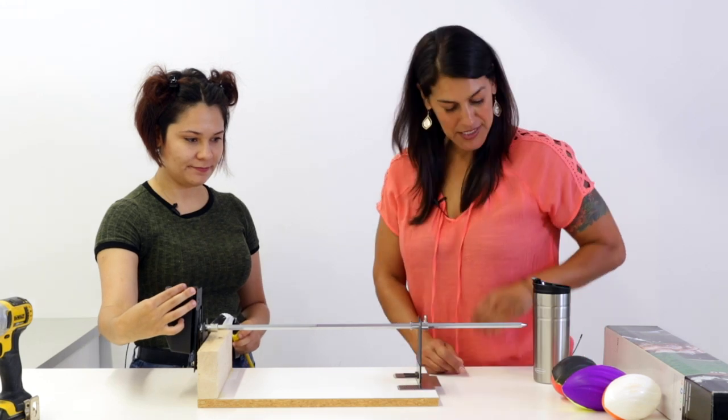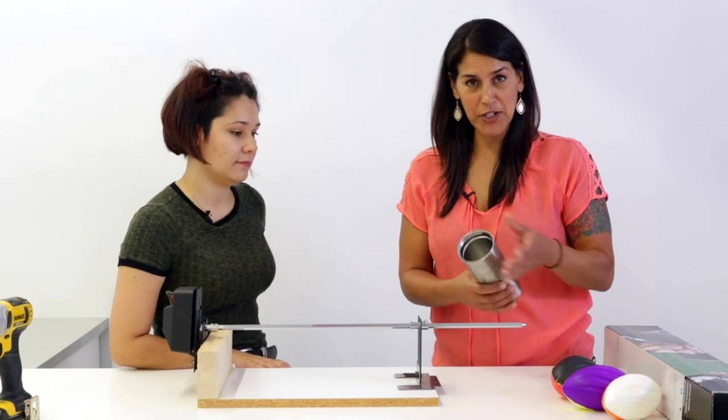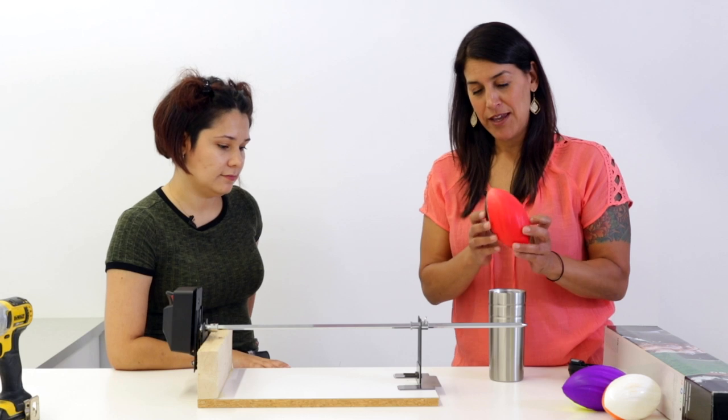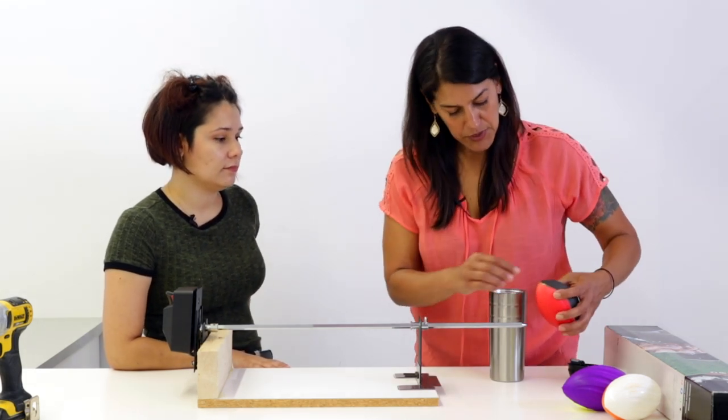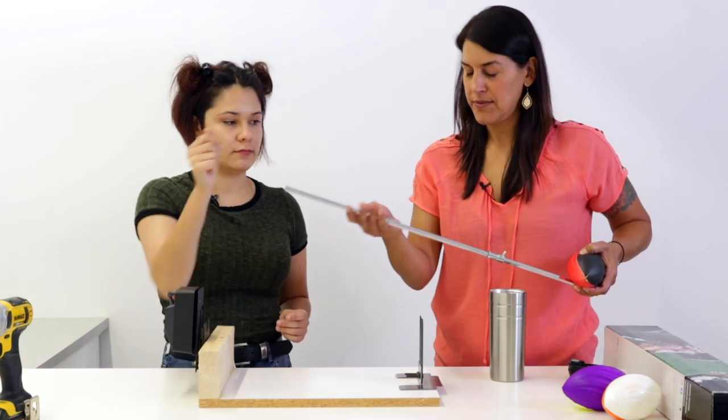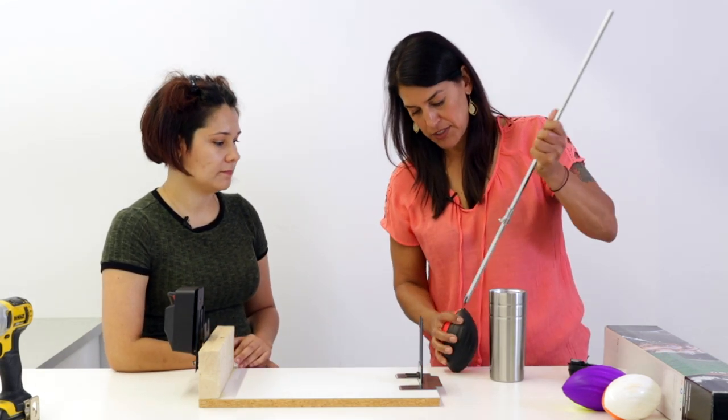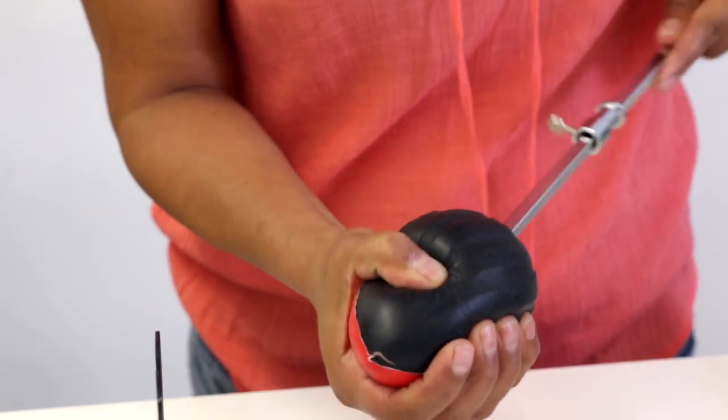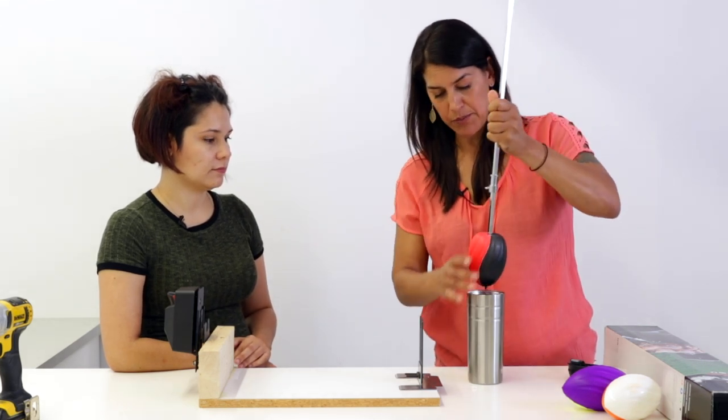That was so easy. Let's get the tumbler on. What we're going to do is grab just a standard coffee tumbler, and we're using these foam footballs that I picked up at the dollar store. They are so handy because they fit really snugly inside the tumbler. Jasmine took a blade and just made an X here, and we're just going to insert the rotisserie rod right into the football.